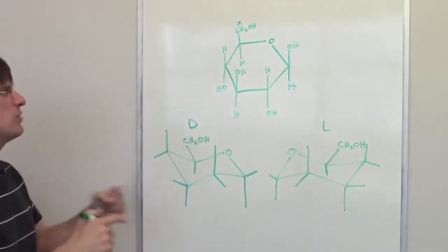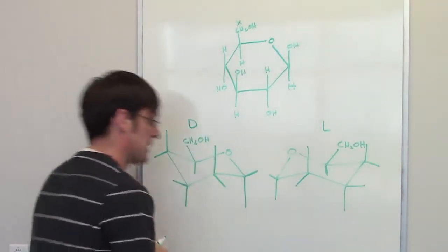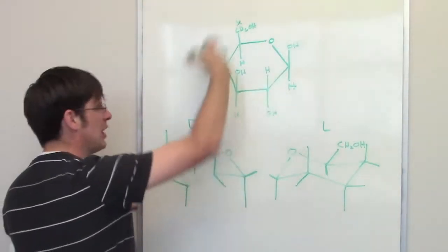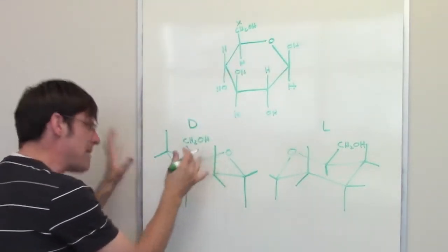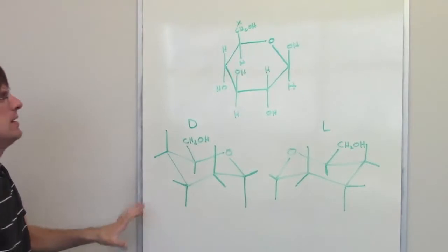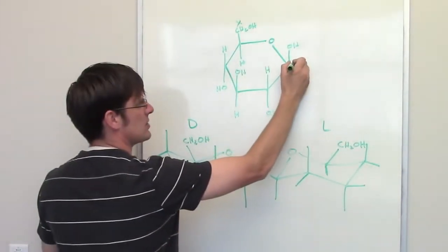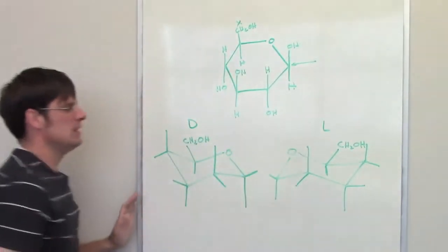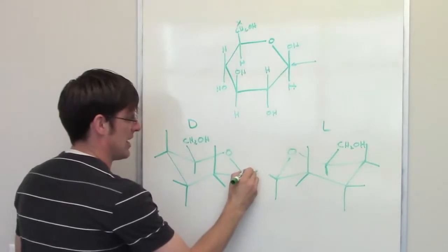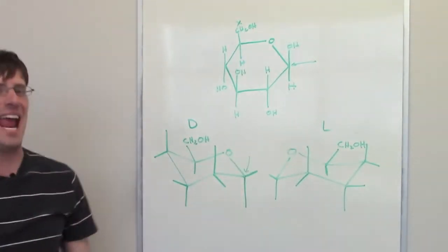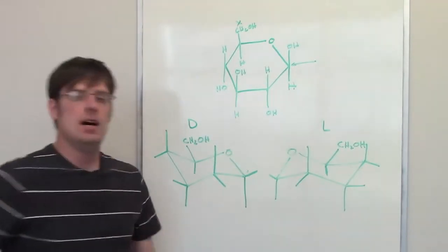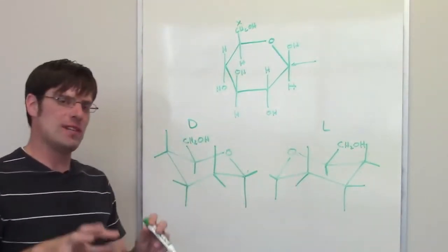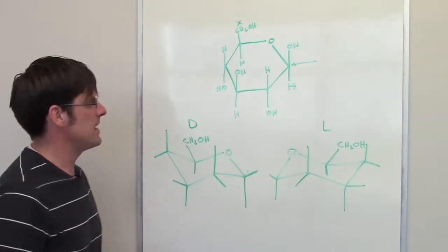Now all we have to do is figure out where to put all of these things. So I have got an oxygen right here in the upper right hand corner that matches my D structure, which means this guy right here, this carbon right there is the carbon right there. Now that carbon happens to be called the anomeric carbon and this is the anomeric oxygen.